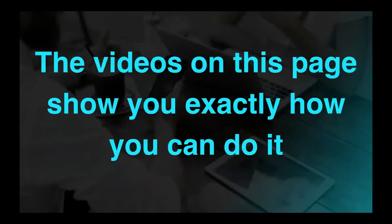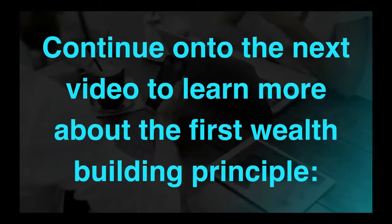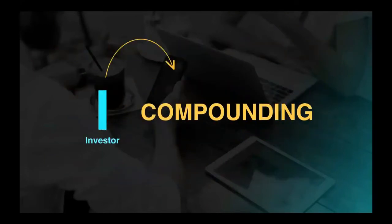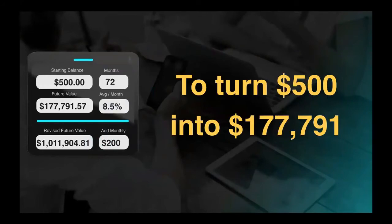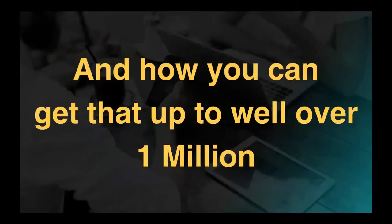The videos on this page show you exactly how you can do it. Continue on to the next video to learn more about the first wealth building principle. That's going to be compounding, which is out of the investor quadrant. It's through compounding, in the next video, we're going to show you how you can turn $500 into $177,000 and how you can even get that up over a million dollars.